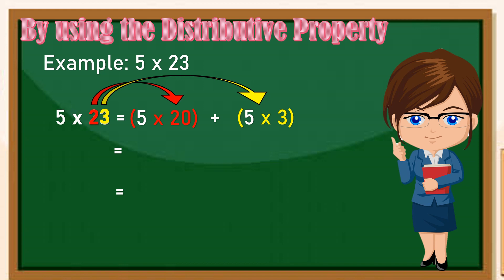5 times 20 is 100 plus 5 times 3 is 15, then plus 100 plus 15 is 115. Therefore 5 times 23 is 115.